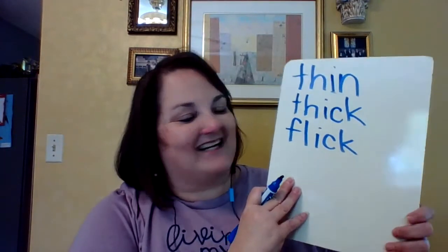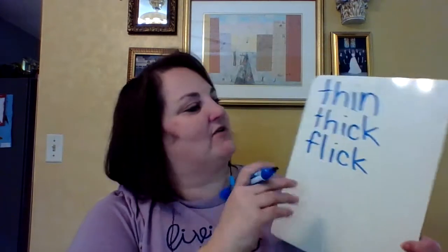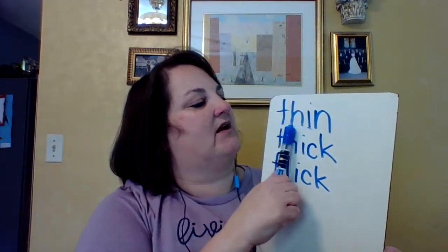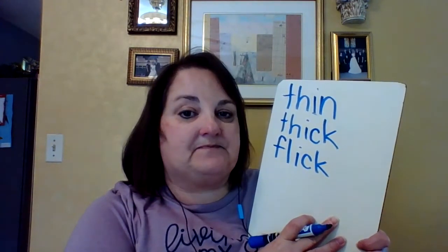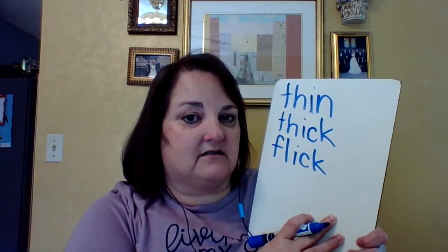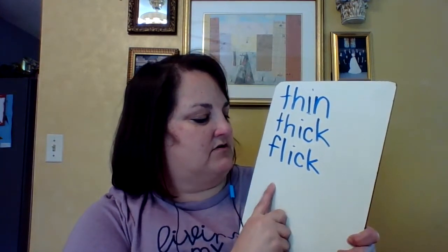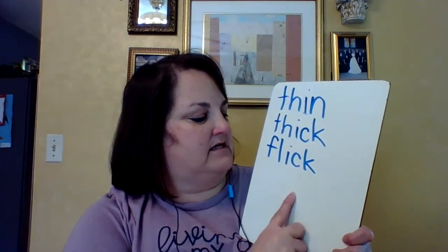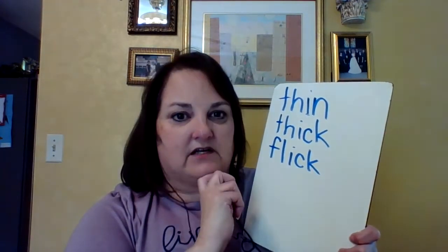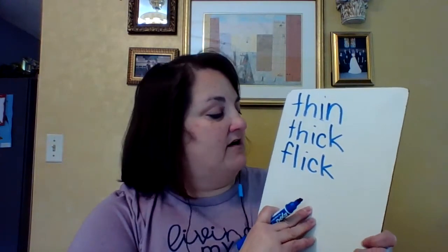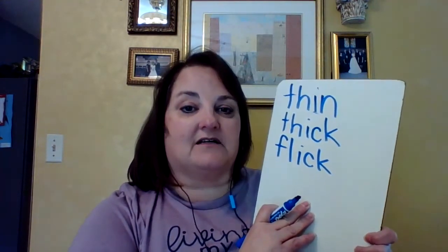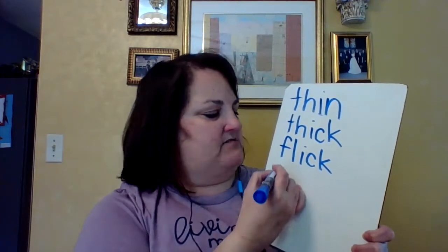All right, let's read our words all together — ready: thin, thick, and flick. Now our next word we want to write is the word 'trick.' Trick, trick, trick — let's sound out 'trick.' Do you hear some parts that are different? Yeah, I hear two parts that are different at the beginning. So let's change 'flick' to 'trick.' Tell me and let's write what you hear at the beginning.